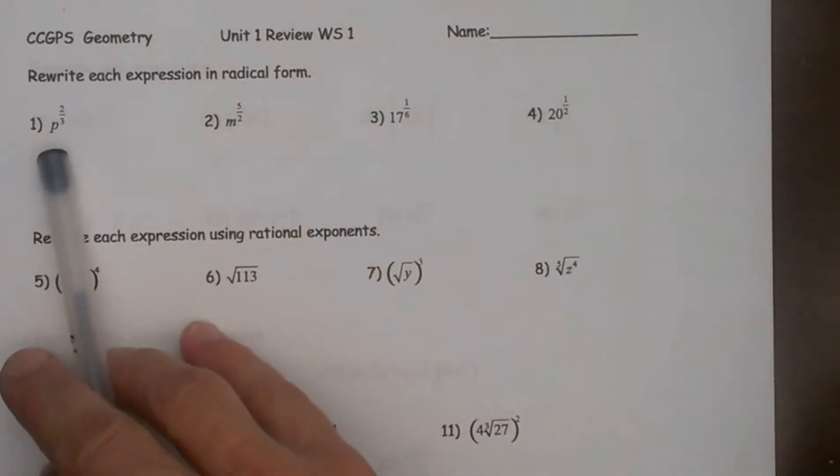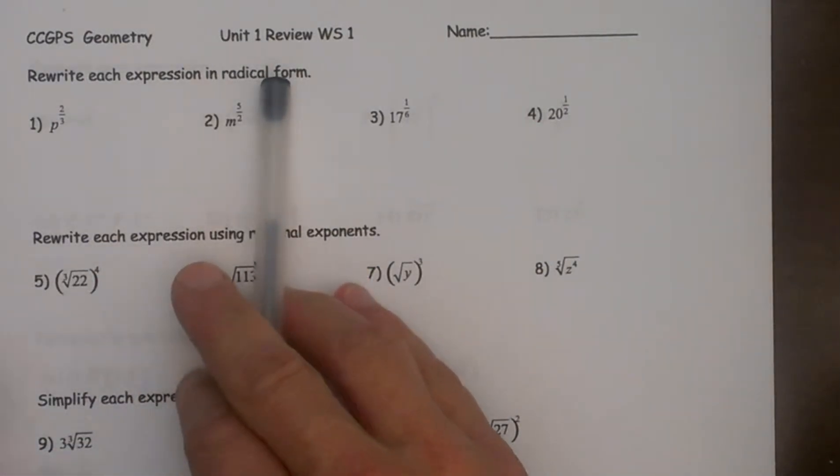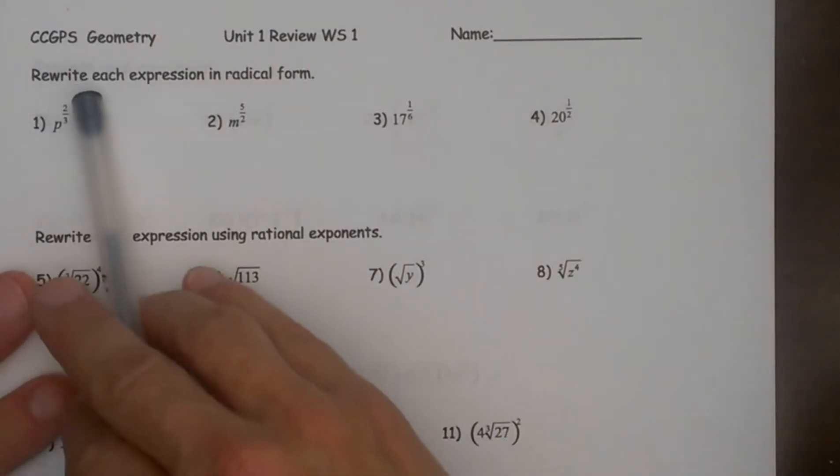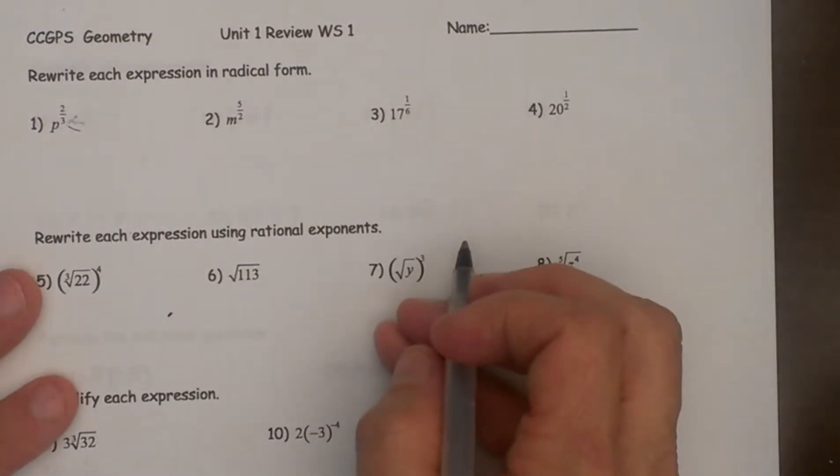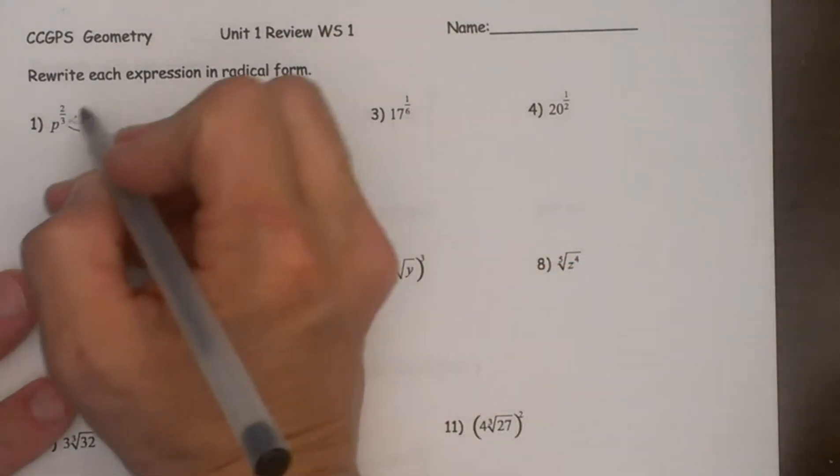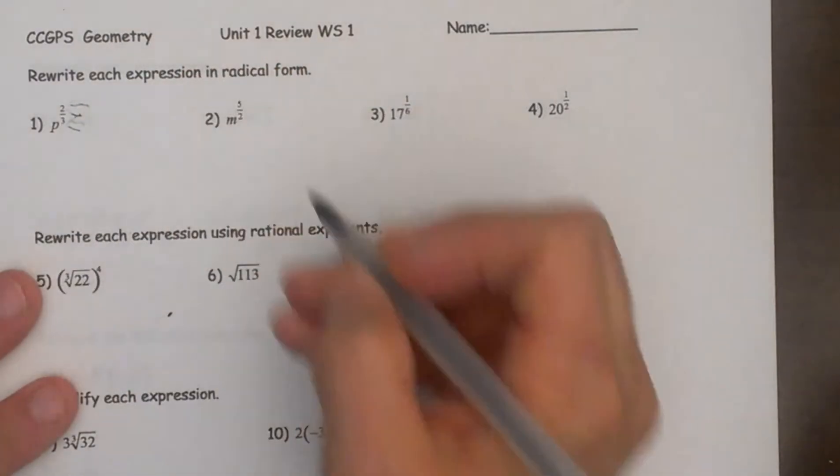So let's start with a rational that we need to change forms back to a radical. We have p to the two thirds. What we are looking at here is the bottom or the denominator of our fraction is actually a root and the top is actually an exponent.